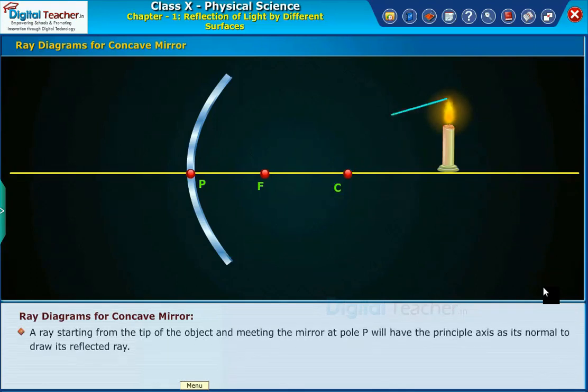A ray starting from the tip of the object and meeting the mirror at pole P will have the principal axis as its normal to draw its reflected ray.